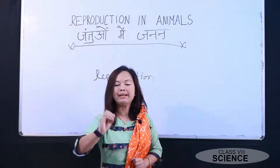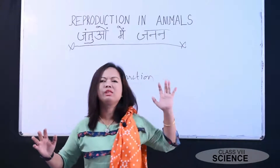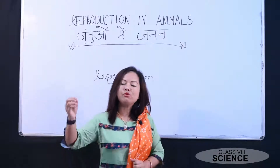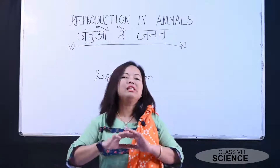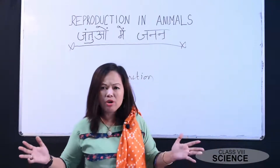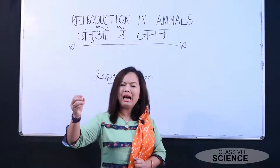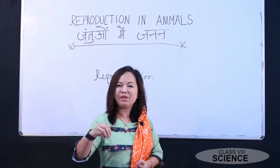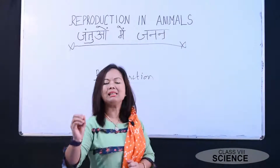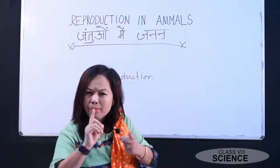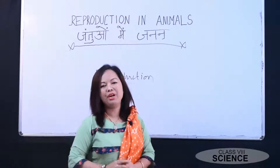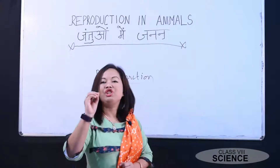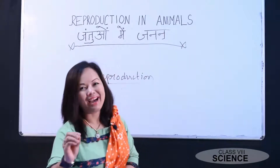Just think — go back maybe a thousand years. If there were no reproduction process, what could have happened? The organisms formed in those days, after death, could have gone extinct. For example, human beings have existed for thousands of years — because of reproduction. Likewise so many animals and plants exist today. Reproduction helps the continuity of species on this earth. The young ones replace the old dying individuals.